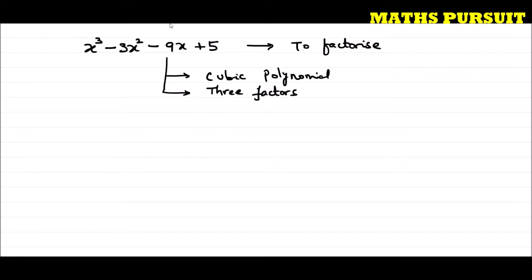If it would have been a quadratic polynomial, then we would be getting two factors. Now after understanding these two things, let us move ahead. Let me assign p(x) equal to x to the power 3 minus 3x to the power 2 minus 9x plus 5.